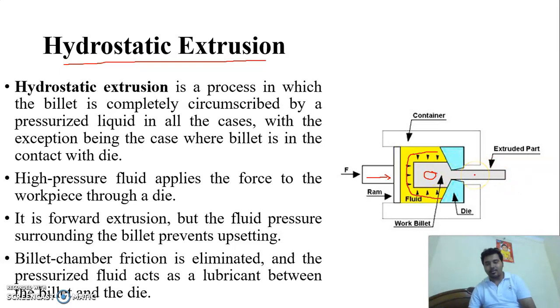In this, there is one advantage in this process, we have a fluid in this process. So we don't need any lubrication for this process. We can produce the brittle material in this process. It is a forward extrusion, as I have said, but the fluid pressure surrounding the billet prevents the upsetting. Billet-chamber friction is eliminated, because there is a fluid, there is not a direct contact of the billet with the container. Therefore, here the friction is zero. And the pressurized fluid acts as a lubricant between the billet and the die.